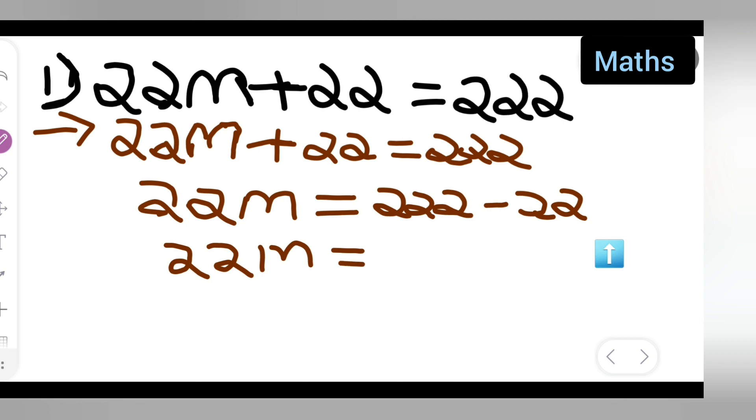Is equal to now 222 minus 22 will give you 200. Now basically your m is equal to, now let us find the value of m. M is equal to 200.